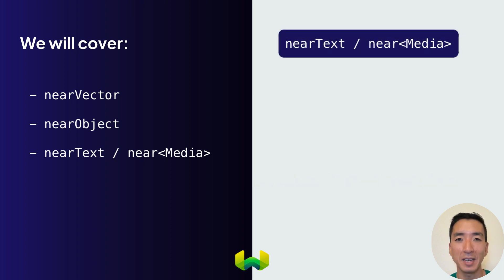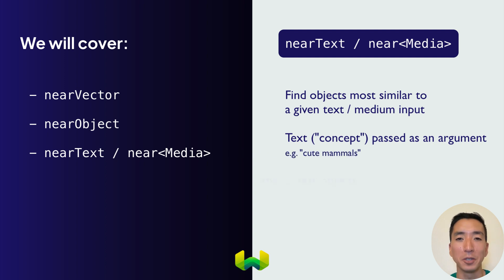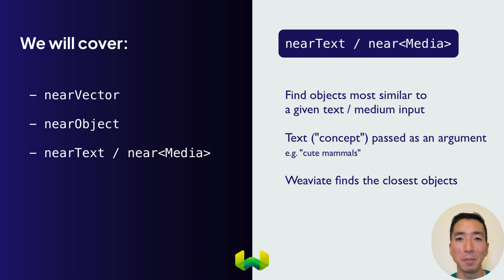Lastly, we have near-text or near-media. This parameter is another powerful search tool that allows you to find objects similar to a given text input. You'll pass the text as a concept argument in your query, and Weaviate will return objects with a high similarity to your input. Near-text is one form of what we'll call more broadly near-media parameters, like near-image for image searches. These near-media parameters follow the same principles of returning results closest to the input medium.